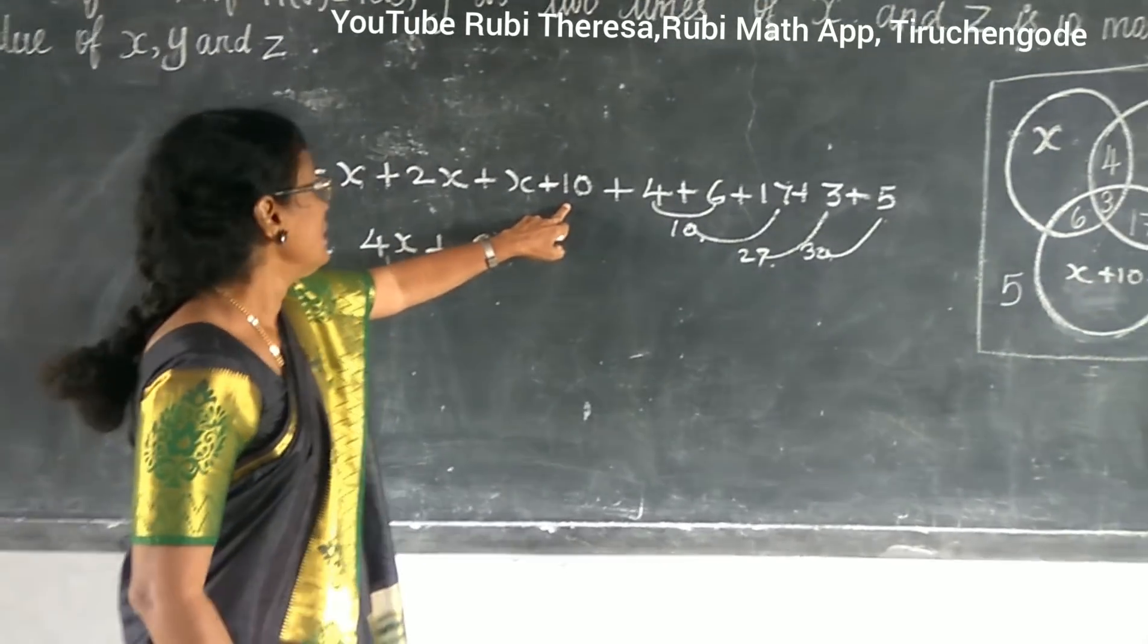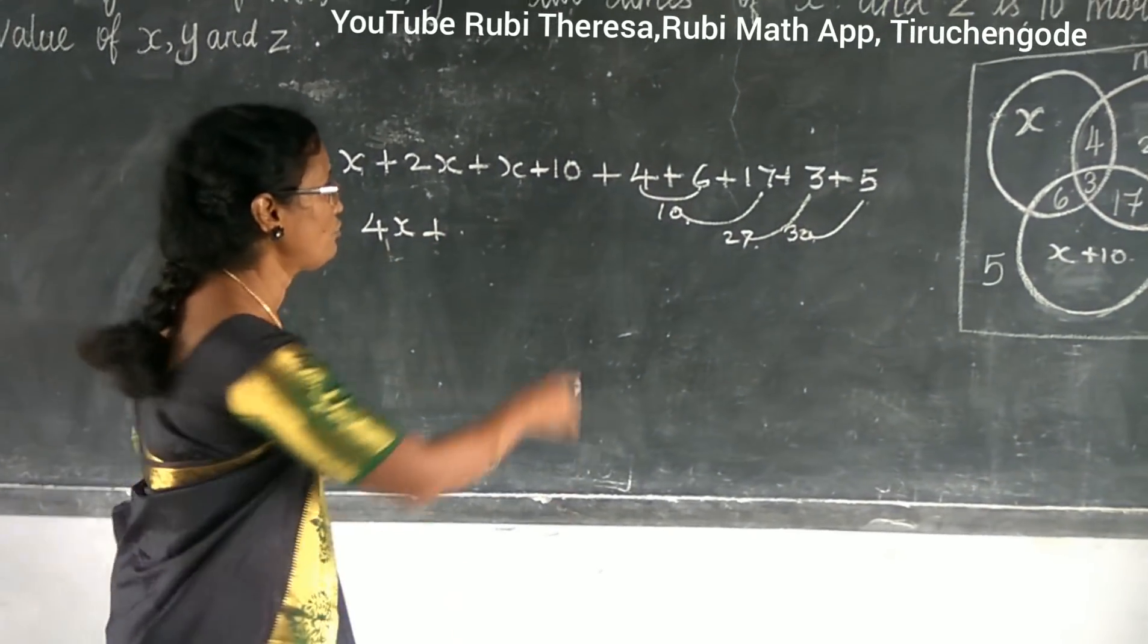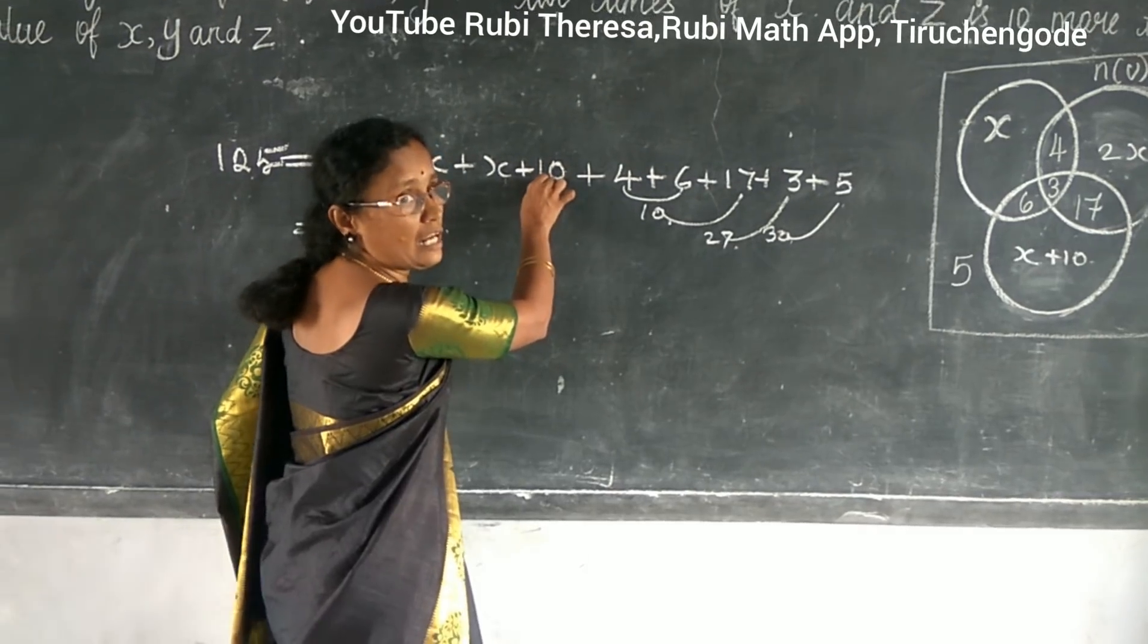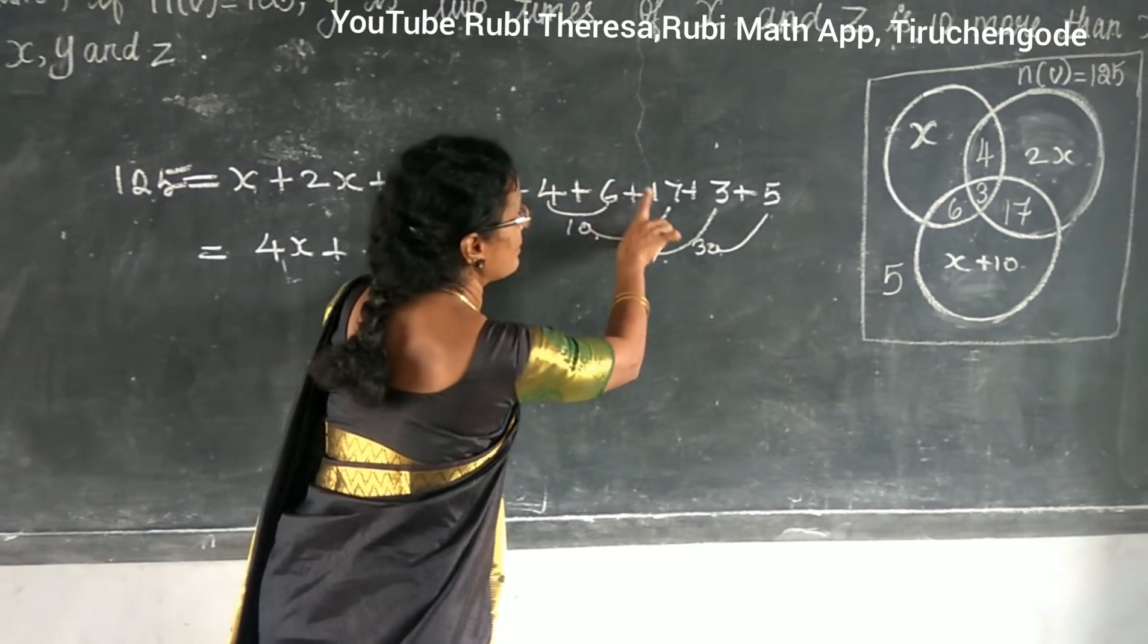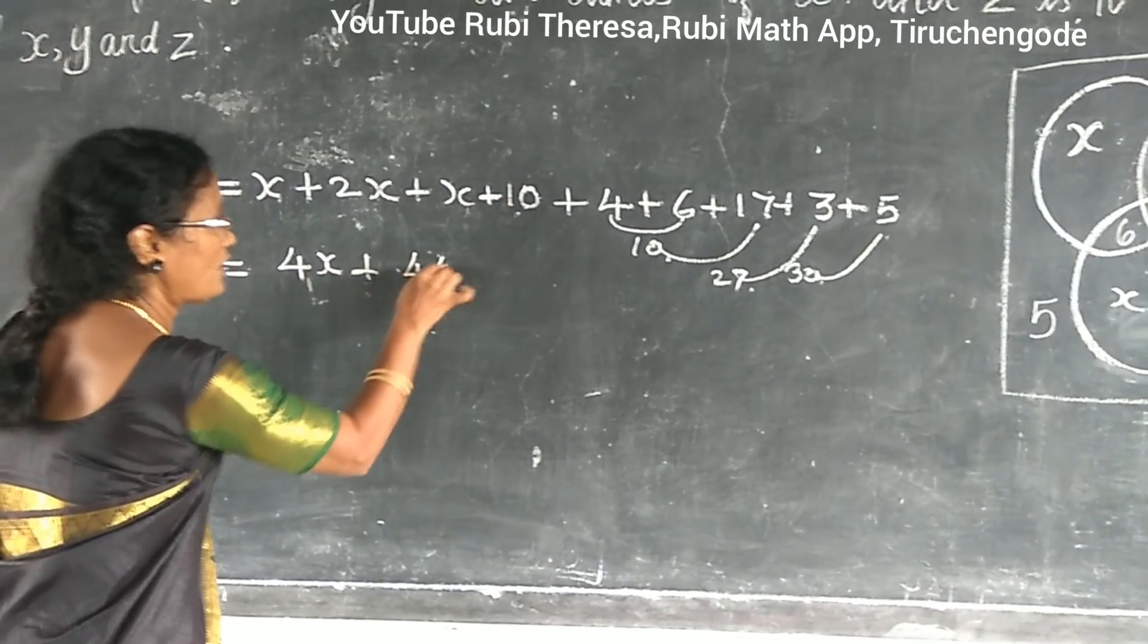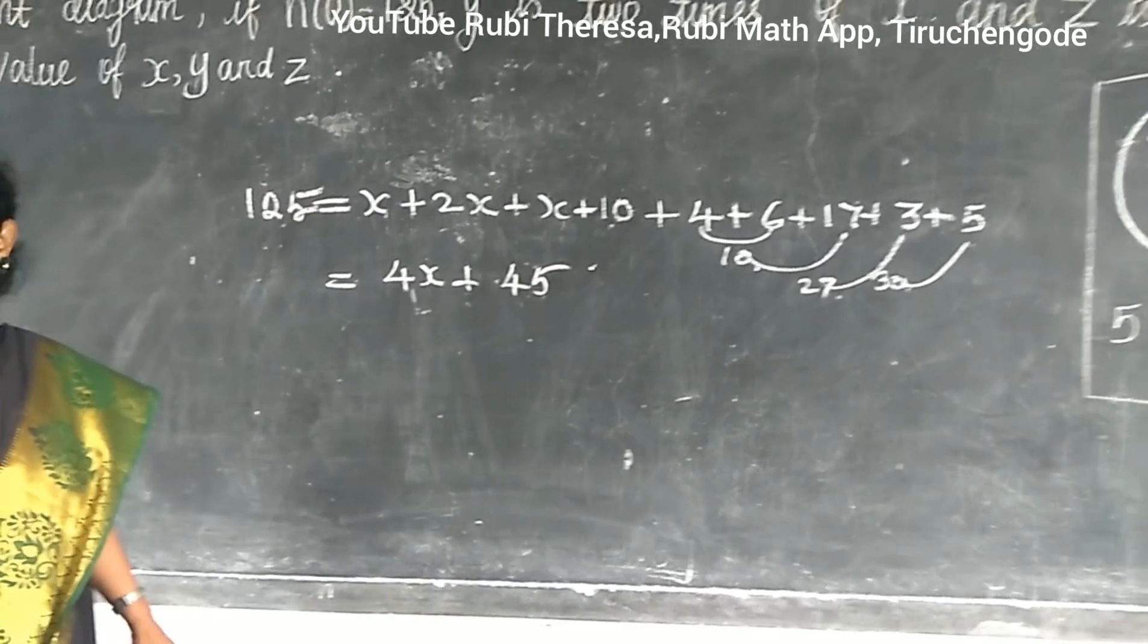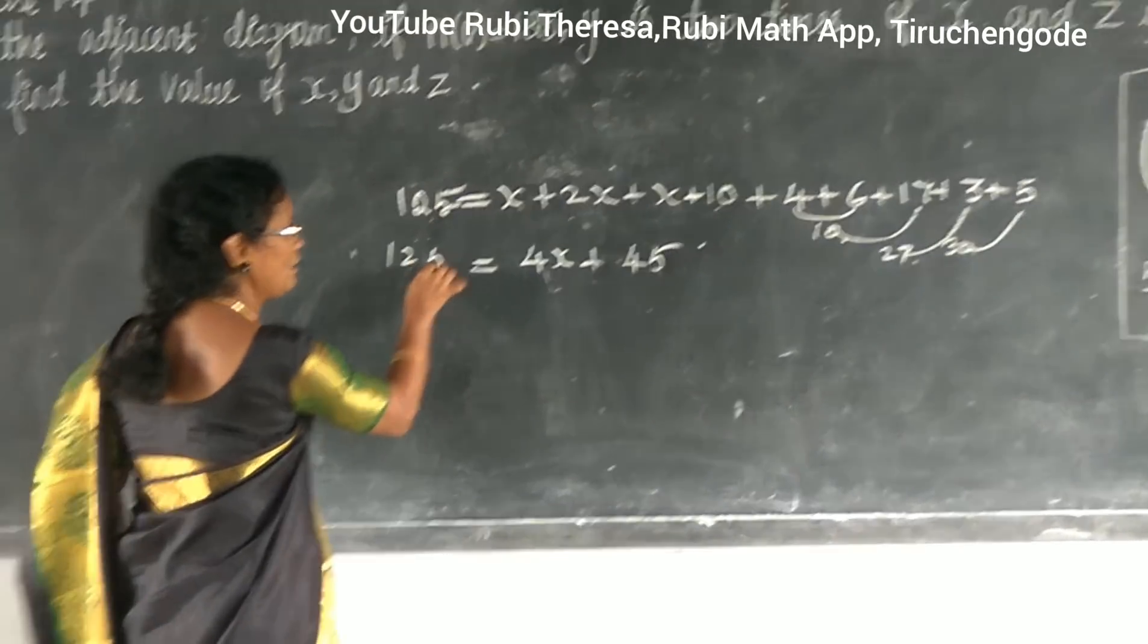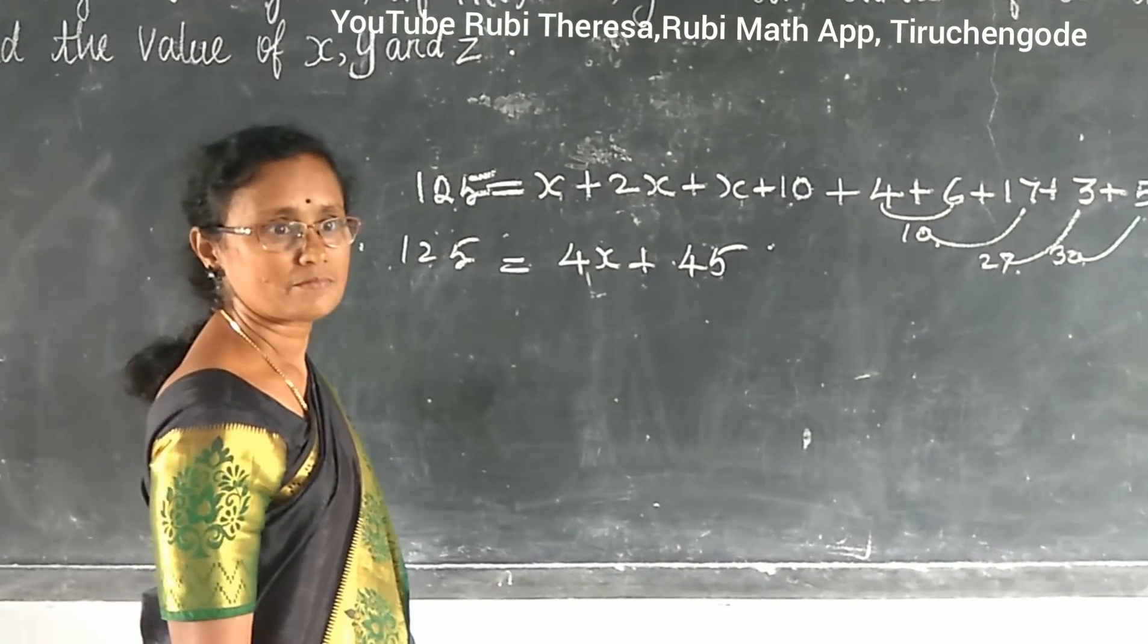But you can add this 10 also. You can add this 10 also. Because only a number set. But this is also number here. So what is it? 45. So 125. Do you follow?